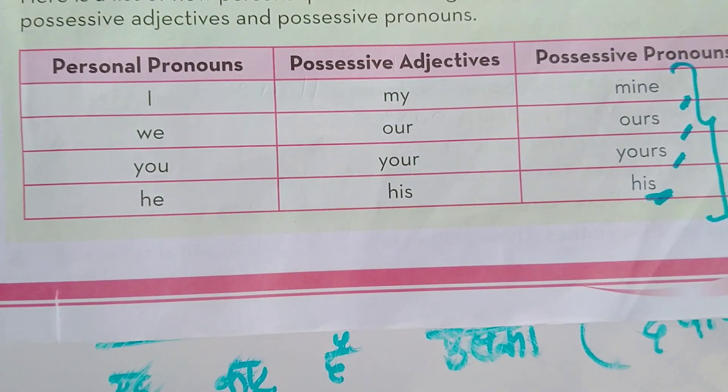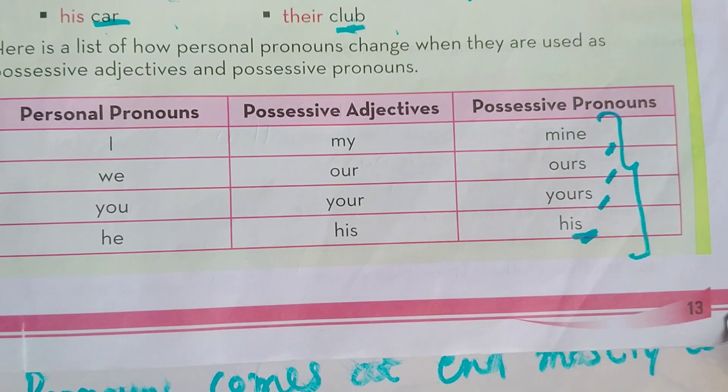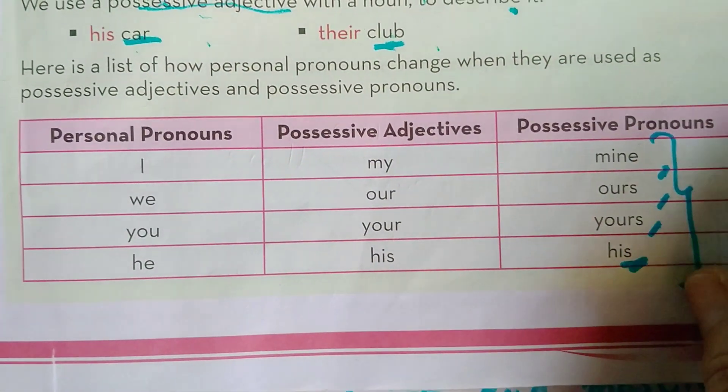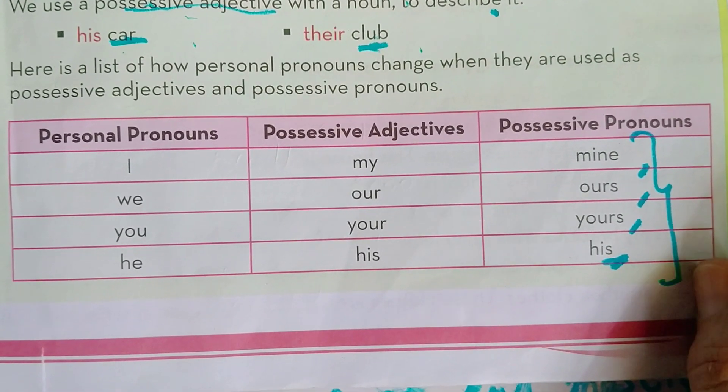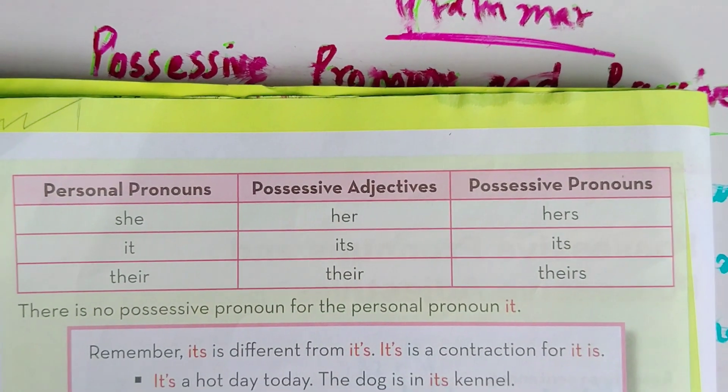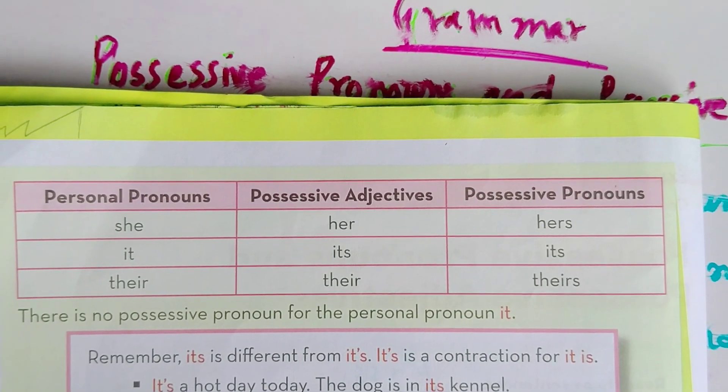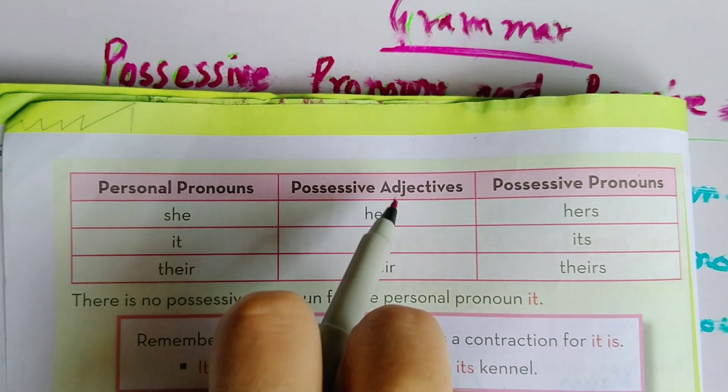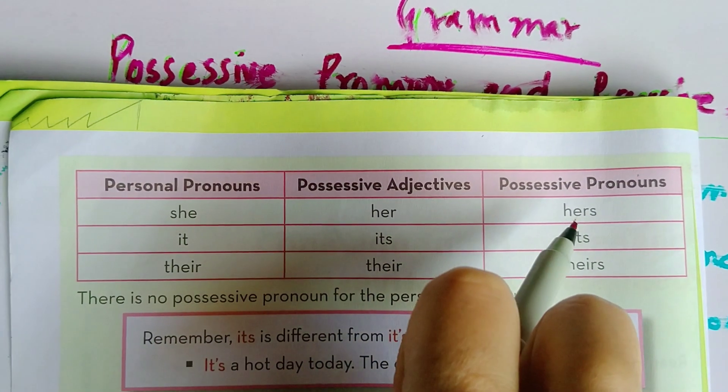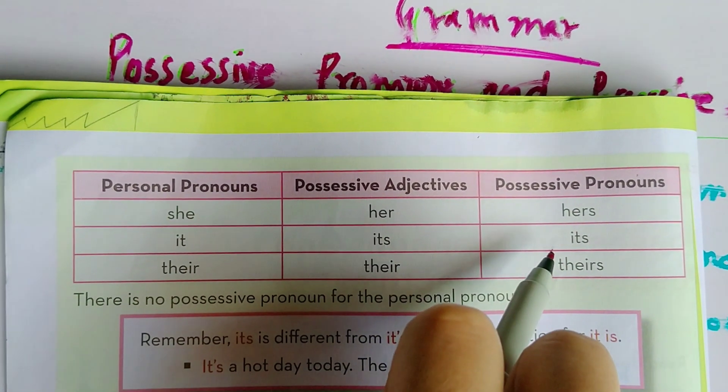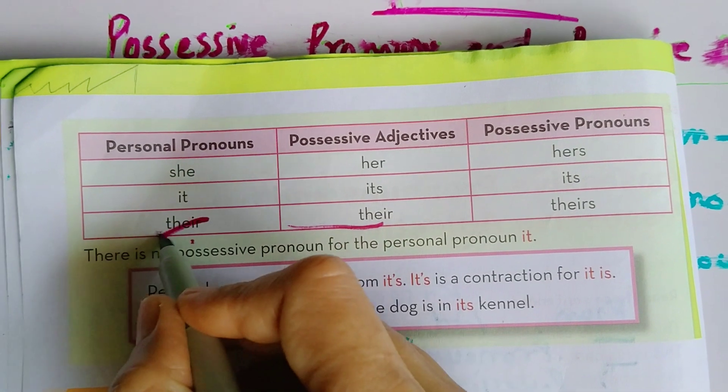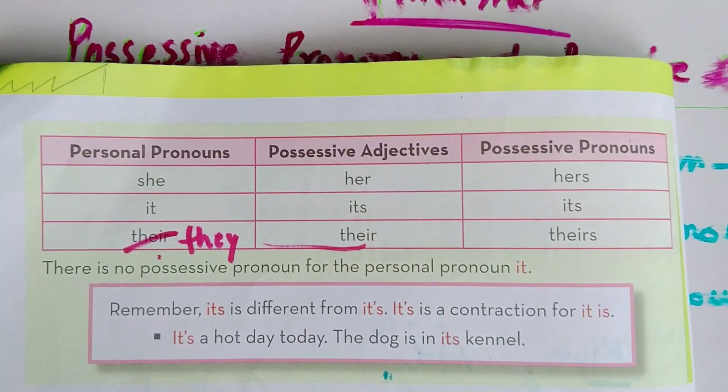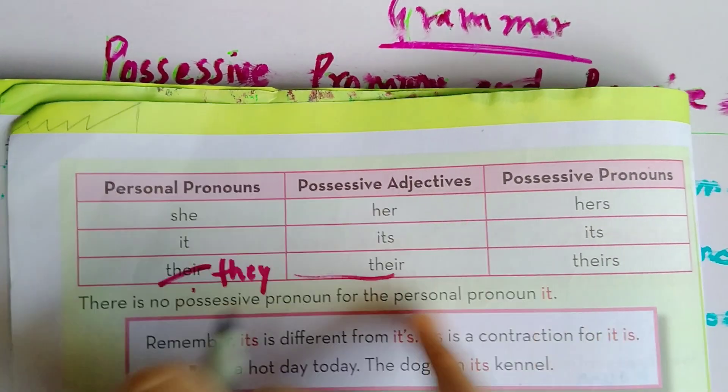There are two or three more. Please note down: she changes into possessive adjective her, and in pronouns hers, mostly s at the end. He, his, his. It, its, its. They - here is a printing mistake, this is they - they changes into their and theirs. Is that clear to everyone?